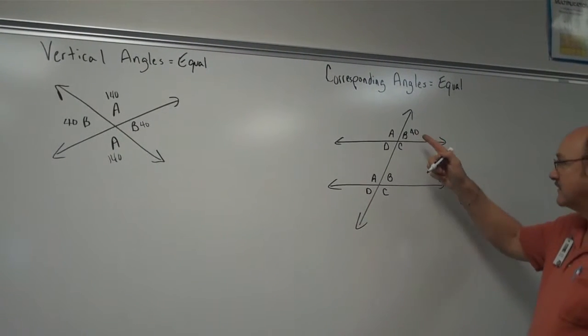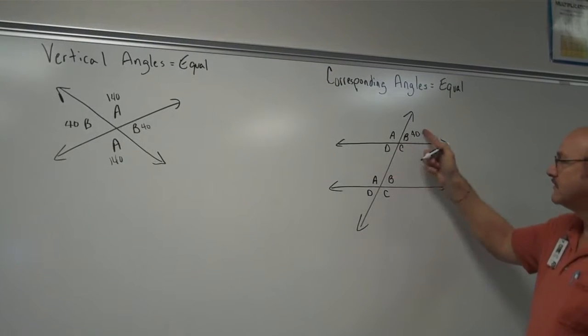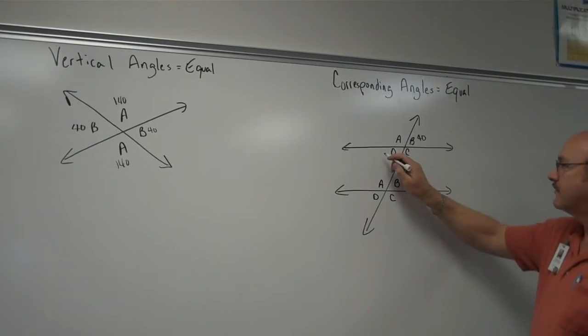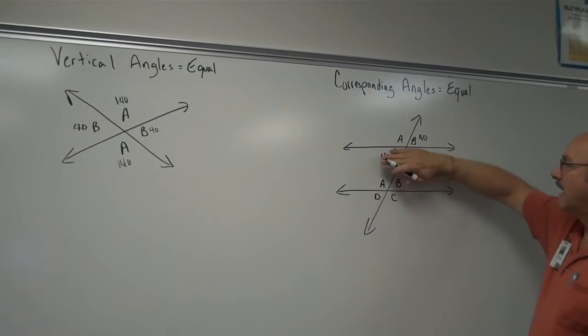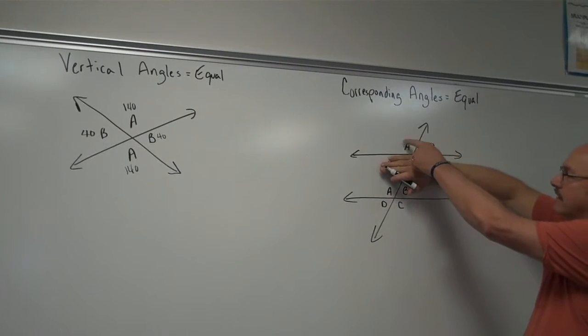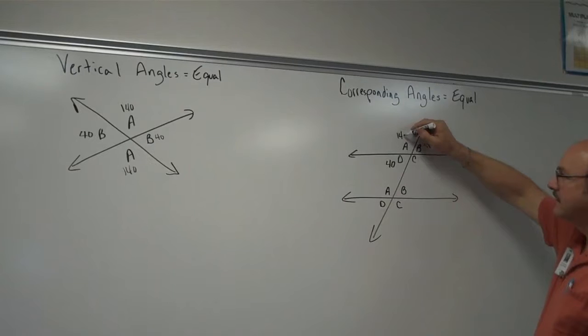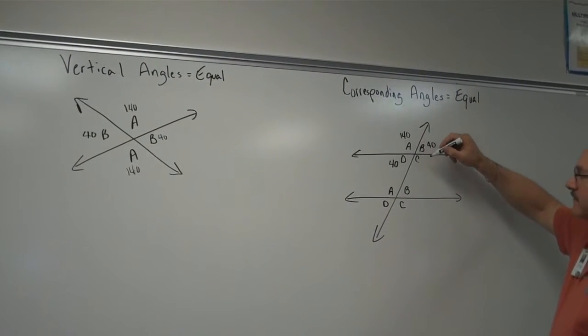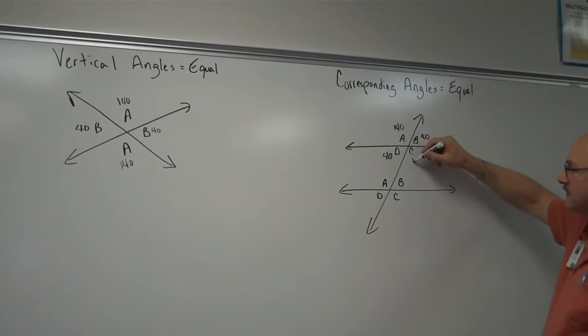Because I know from just now, vertical angles are the same. If this is 40, this is 40. I know a straight line is supplementary. So if this is 40, this must be 140. If this is 140 because of the vertical angles, this is 140.